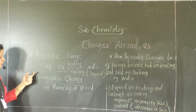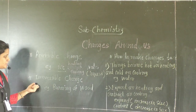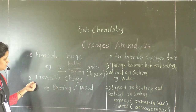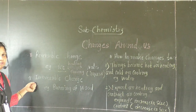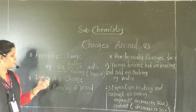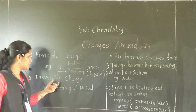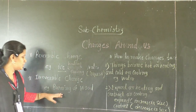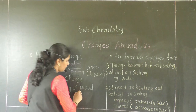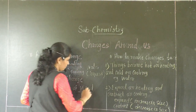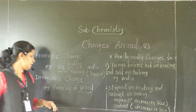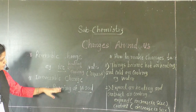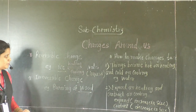Now the second type of change is irreversible change. In irreversible change, all the properties of the substance change totally. For example, burning of wood — we will not get the wood back. So this is our example of irreversible change.